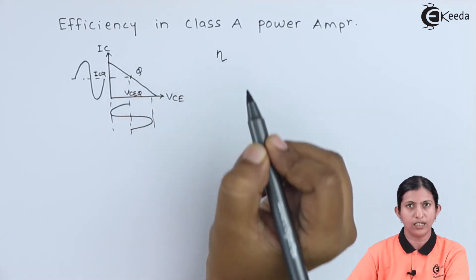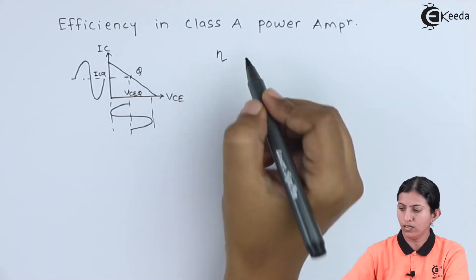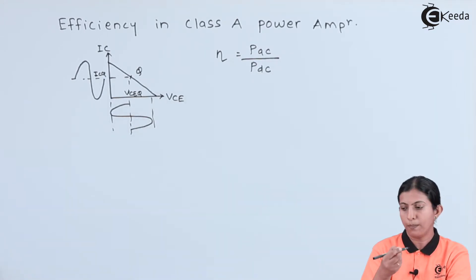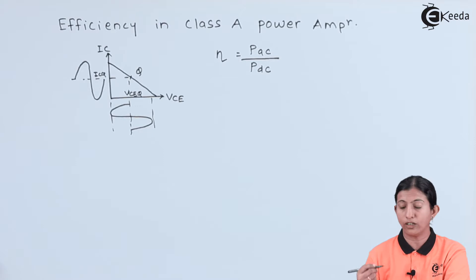We will calculate the efficiency. Eta is equal to the ratio of PAC to PDC, where PAC is the AC output power of transformer coupled amplifier and PDC is the DC power supplied to the transformer coupled amplifier. First we will calculate PAC, then we will calculate PDC, and we will take the ratio to get the efficiency.